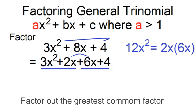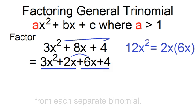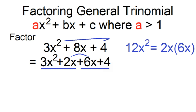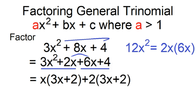Next, factor out the greatest common factor from each separate binomial. For 3x² + 2x, the GCF is x and the other factor is 3x + 2. For 6x + 4, the GCF is 2 and the other factor is 3x + 2.